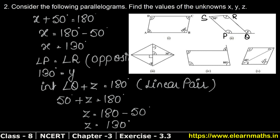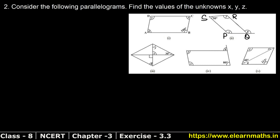So z equals 130 degrees is the answer for part B. Now let's do part C. We need to find x, y, z. This figure is a parallelogram, so let's name it MNOP with Q as the intersection point.